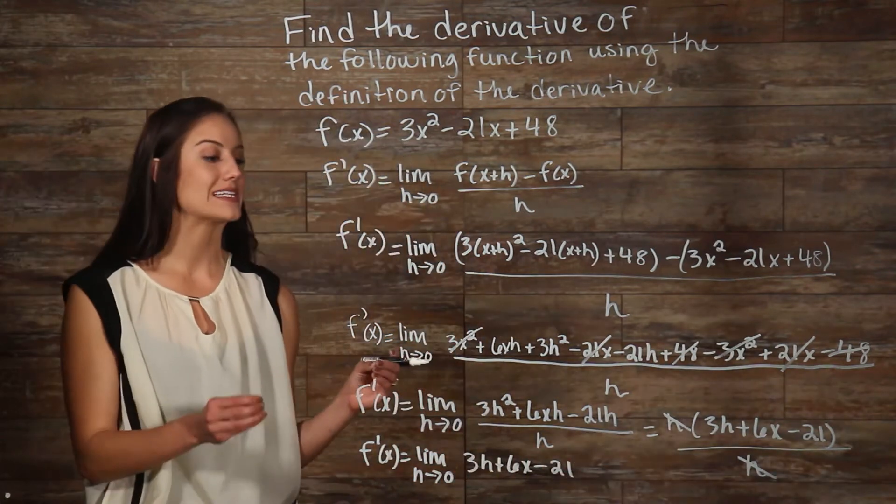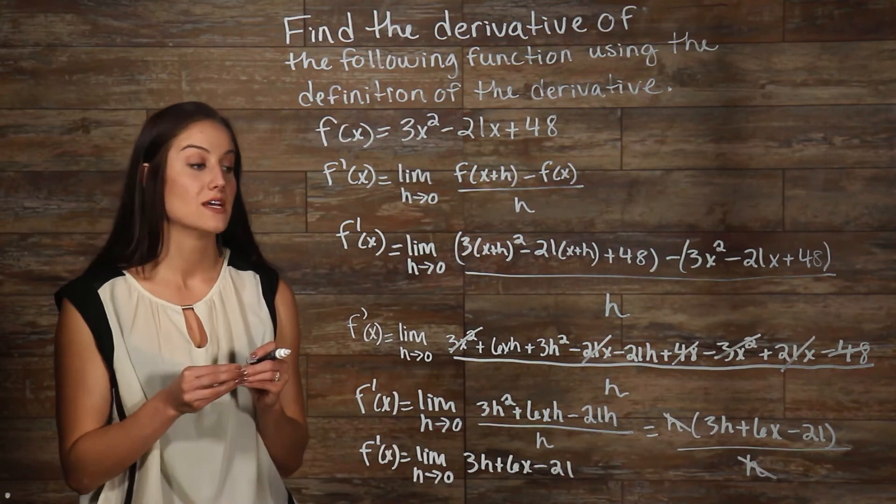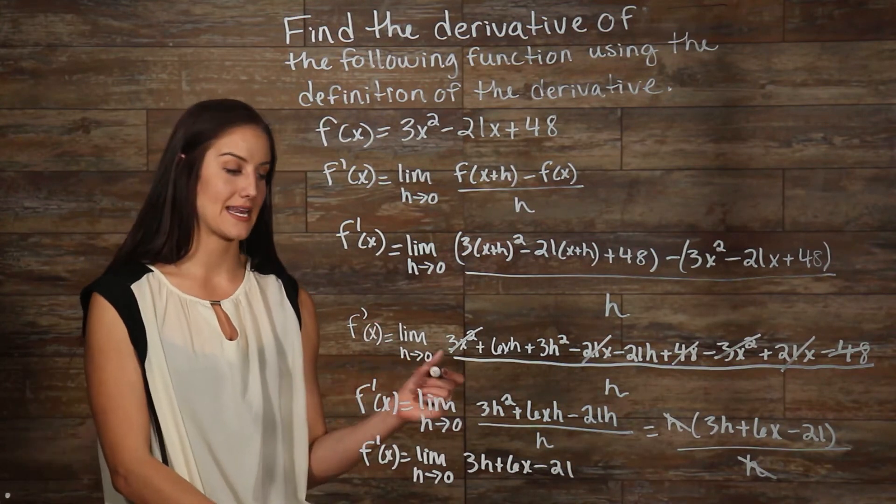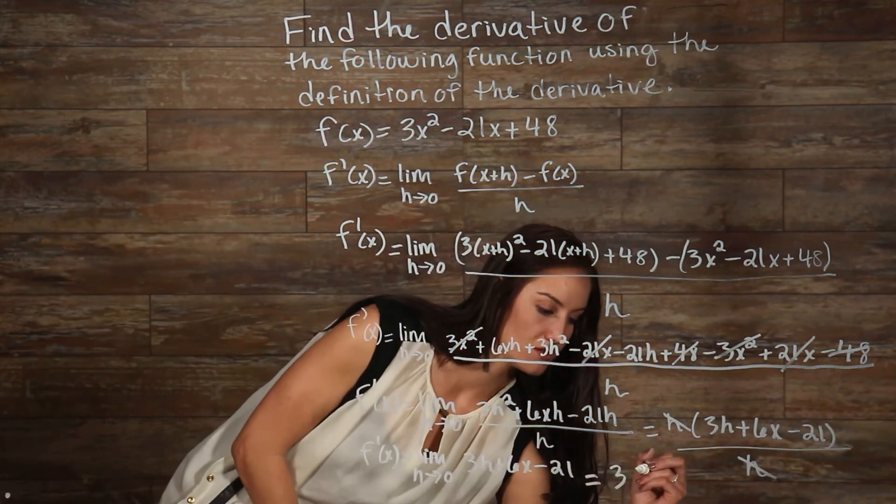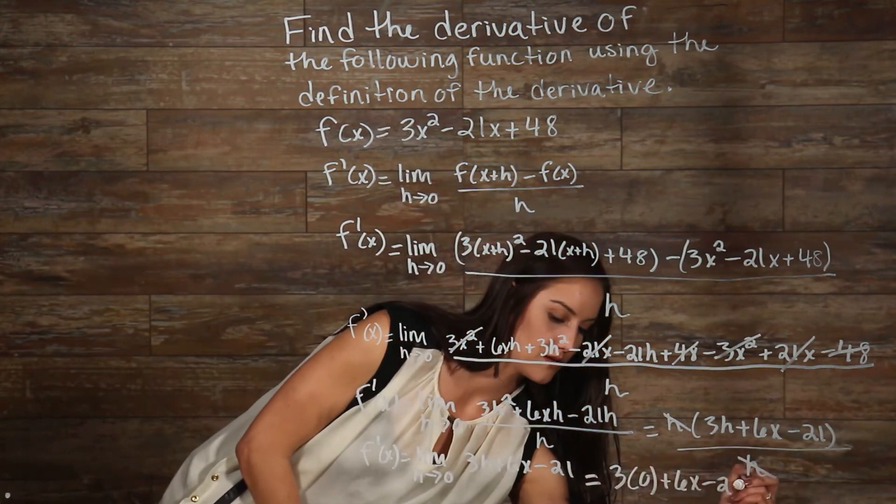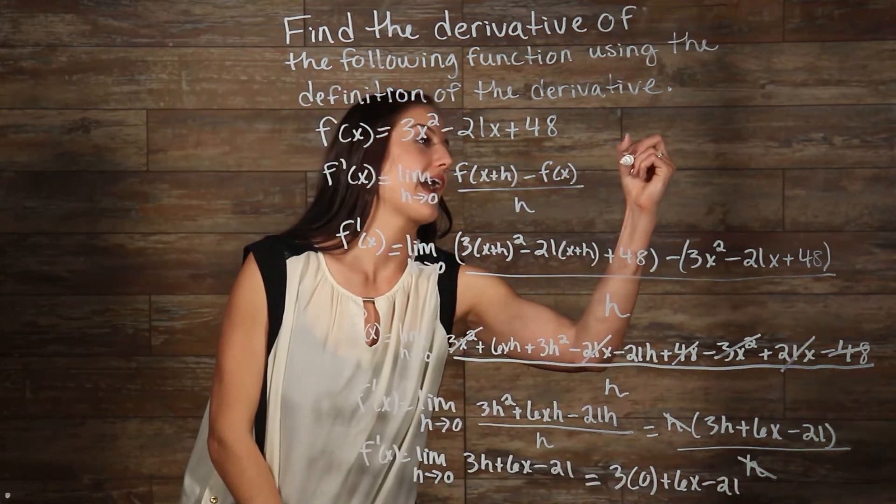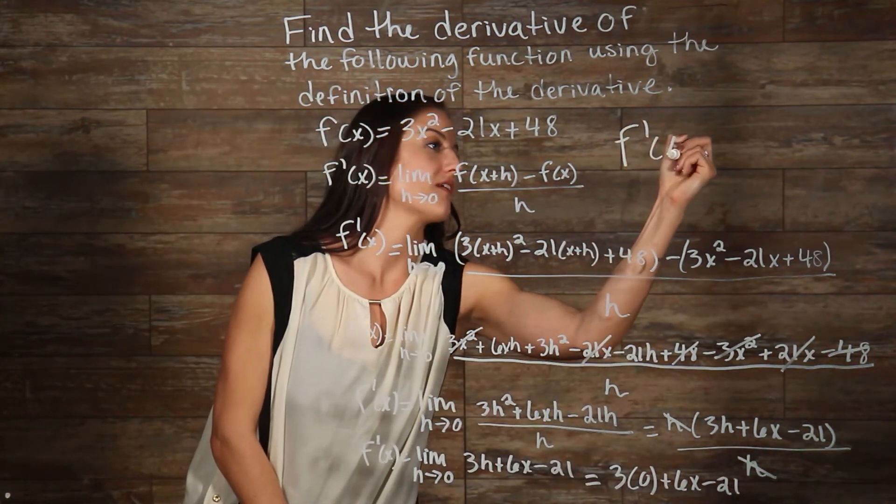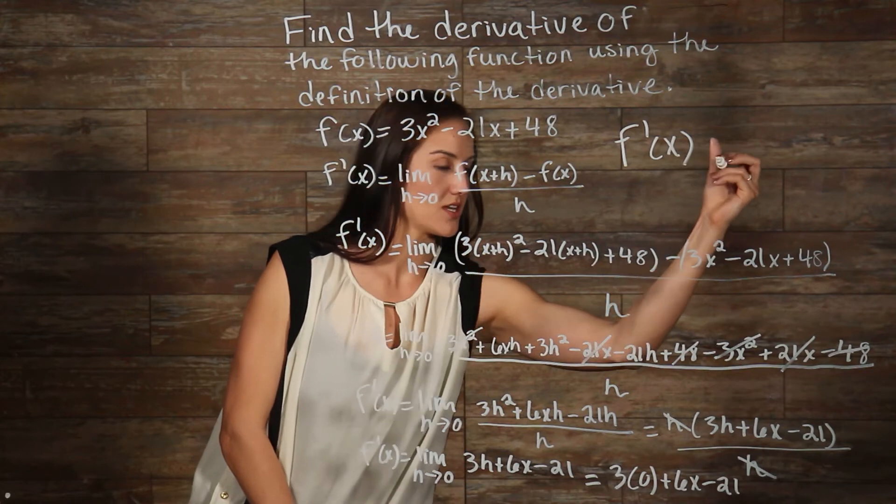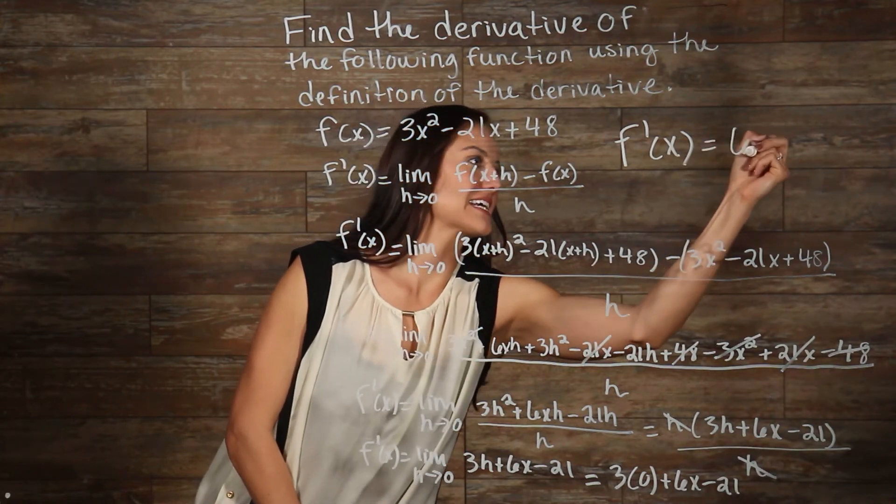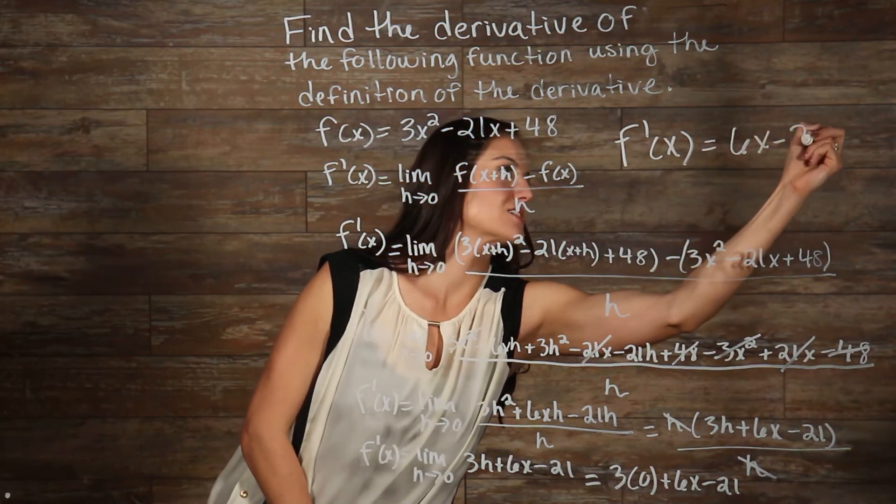And so now we just need to evaluate our limit. We do this by plugging in 0 everywhere we see an h.